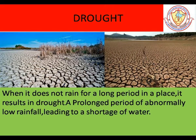Drought. When it does not rain for a long period in a place, it results in drought. Drought is a condition when the level of underground water goes down much below normal. During a drought, lakes and water resources dry up. In India, the states of Rajasthan, Haryana and Odisha are very drought prone.